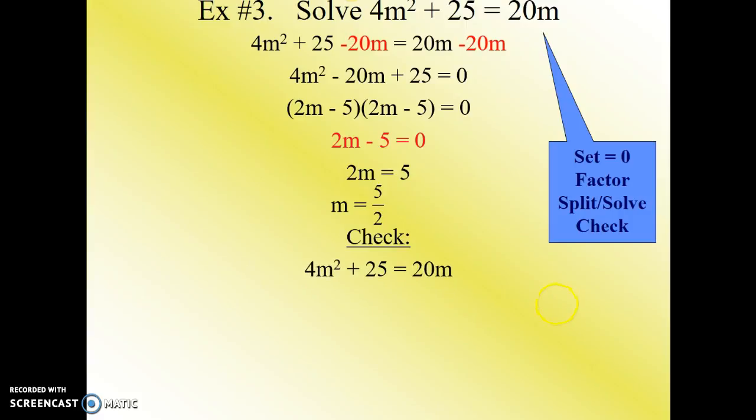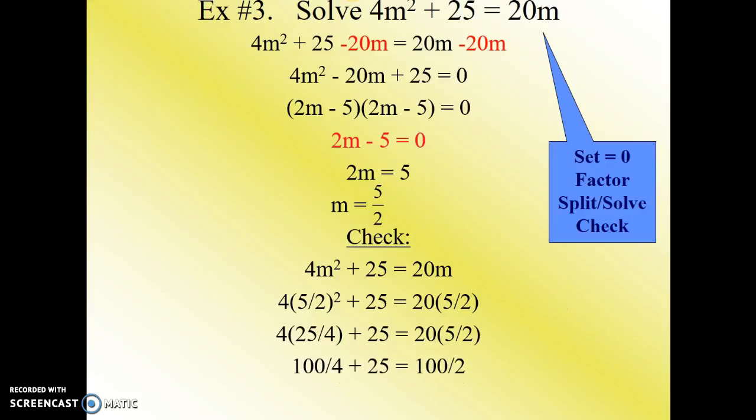So let's check it. 4m squared plus 25 equals 20m. We want to use the original equation to check it, not any of the other equations. Plug in 5 over 2 for m. When we square 5 over 2, we get 25 over 4. When we multiply those two multiplication problems, we end up with 100 over 4 plus 25 equals 100 over 2. Well, 100 over 4 simplifies down to 25, 100 over 2 simplifies to 50. So 25 plus 25 equals 50 is actually a true statement. It checks. Therefore, our solution is, in fact, 5 over 2 or 2.5.